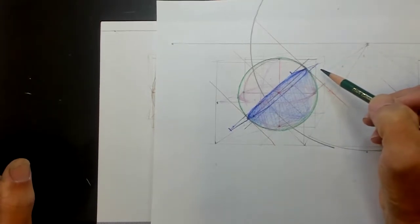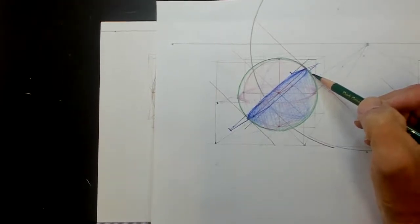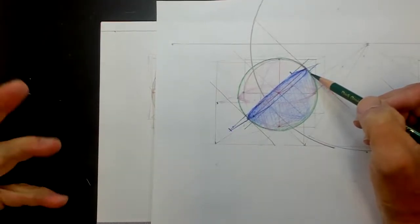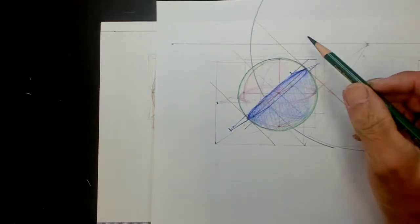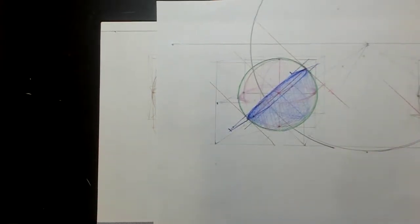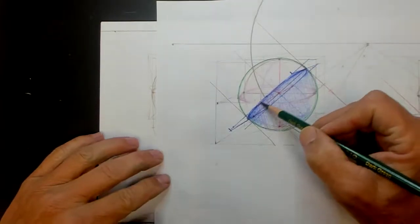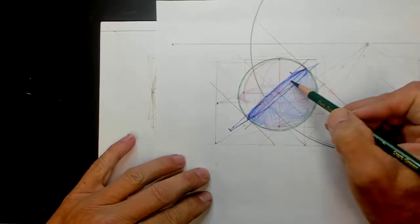Core shadow kind of implies a gradation and reflective light, and in perspective drawing we're really not dealing with that. It's either in light or in shadow.